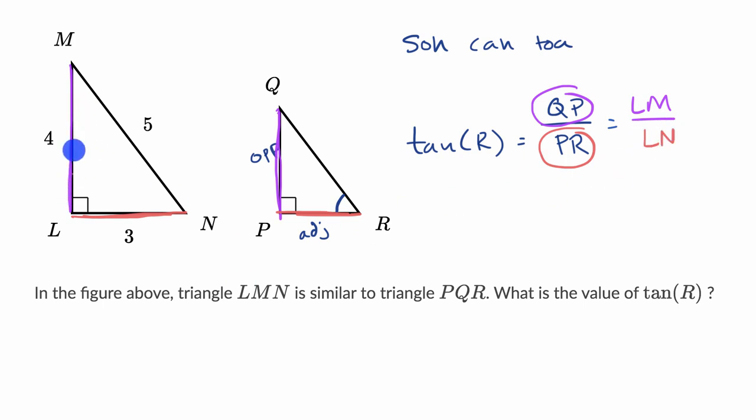And of course, LM has length four, so this is four. And LN has length three. So the tangent of R is going to be equal to 4 thirds. And we're done.